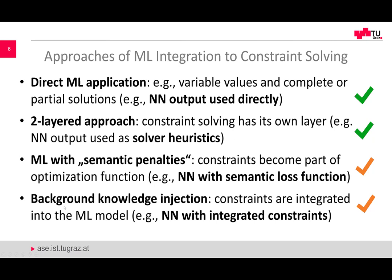Another approach is to include background knowledge or semantic knowledge — not in the optimization function — but directly into the machine learning model. There is ongoing work on how to integrate rules and logical expressions directly into a neural network model. In this overview I am focusing on the first two aspects: direct ML application and the two-layered approach. I am not focusing on extending optimization functions with semantic penalties or extending neural networks with declarative knowledge — this is discussed in the overview paper referenced at the end of the slide.